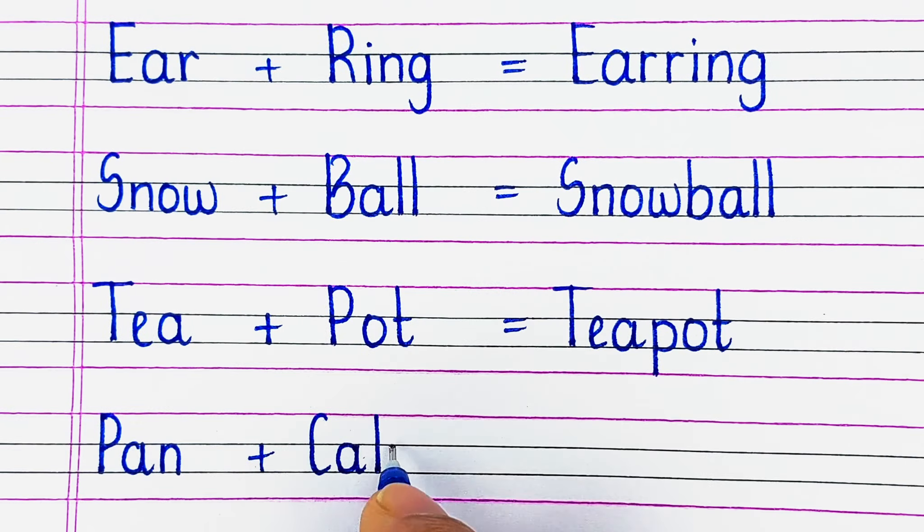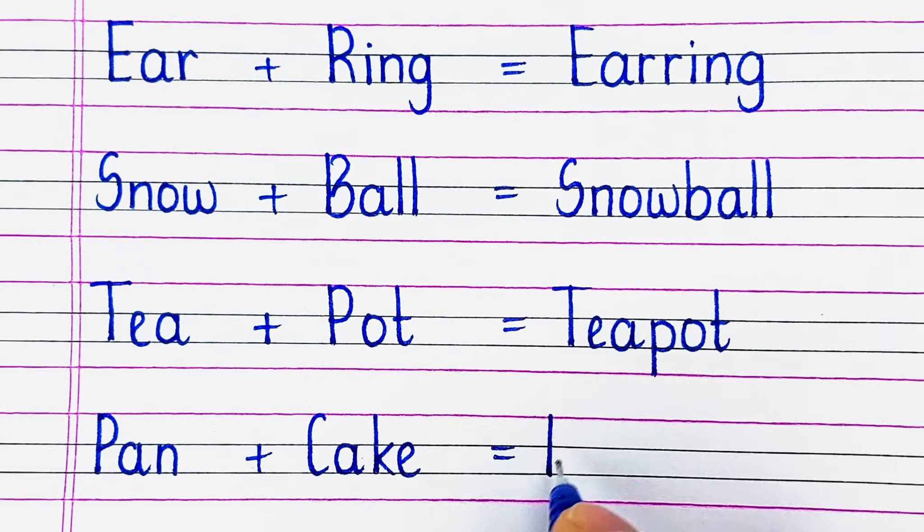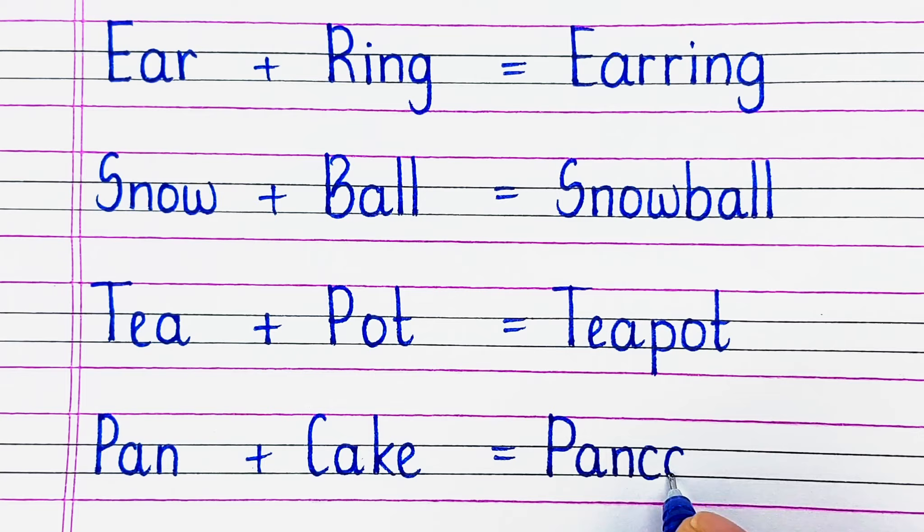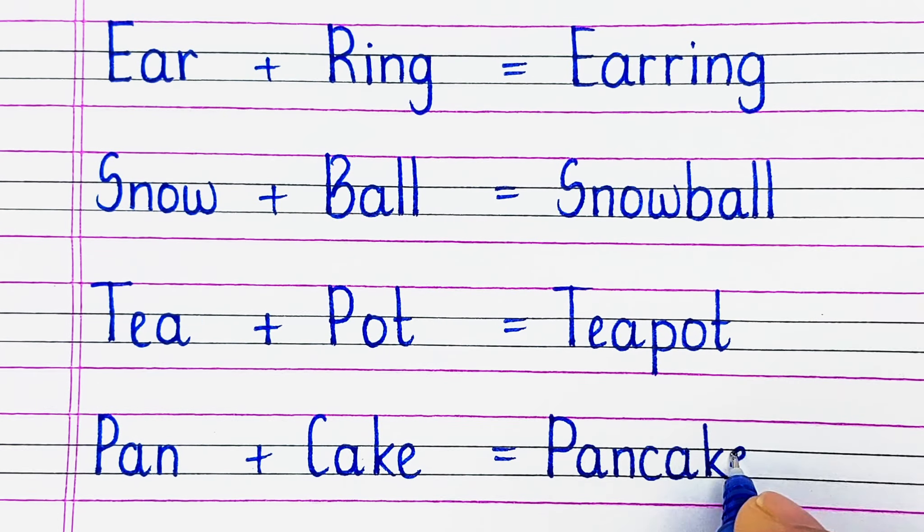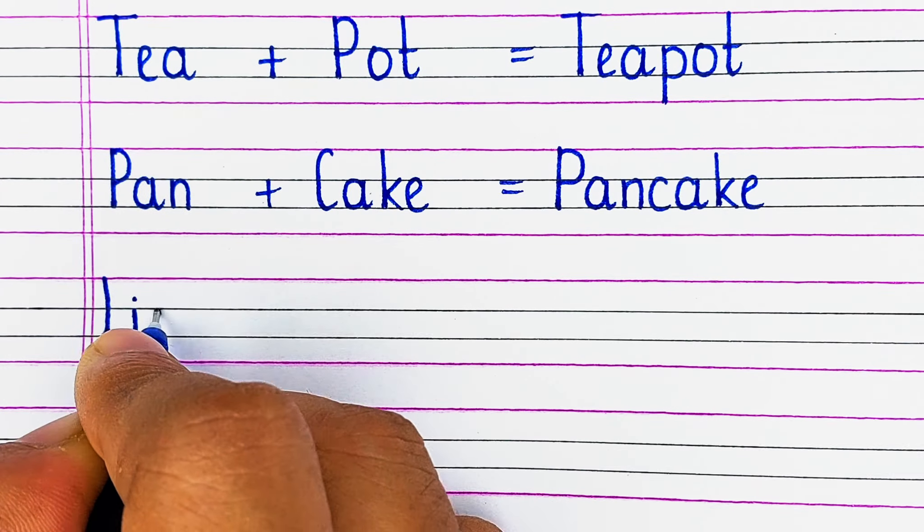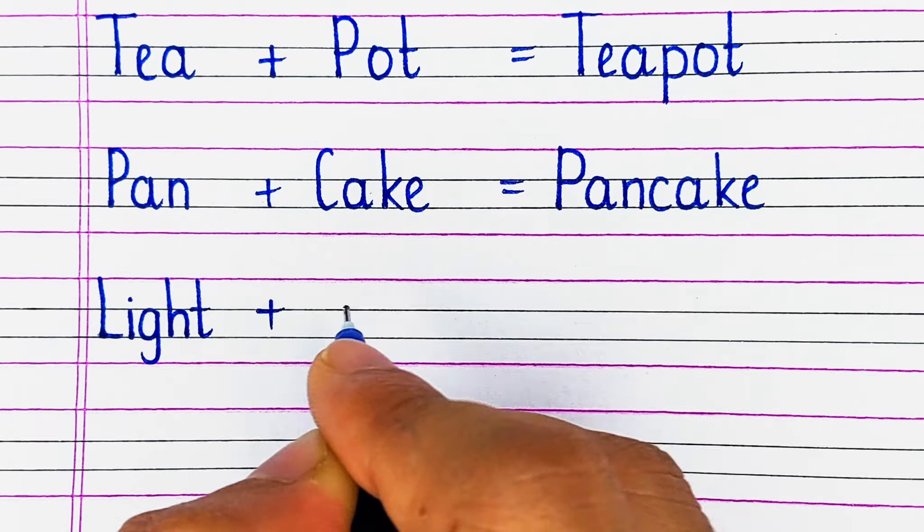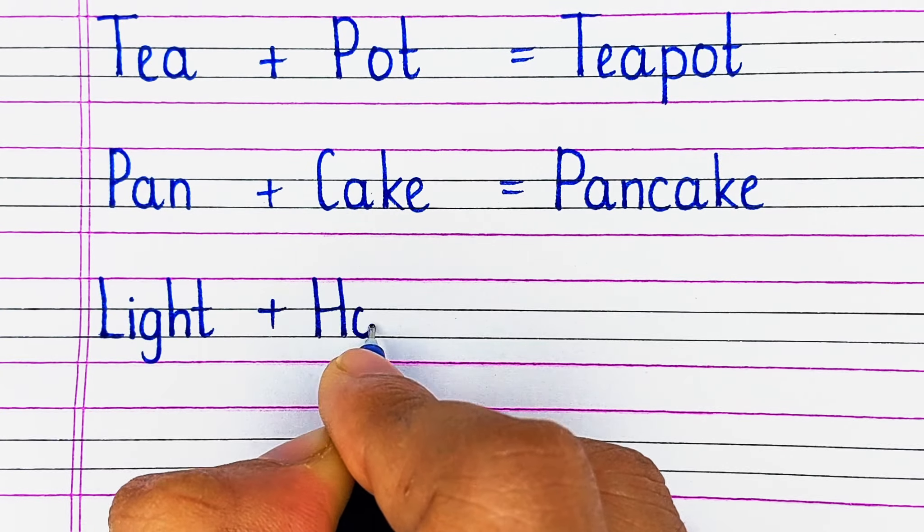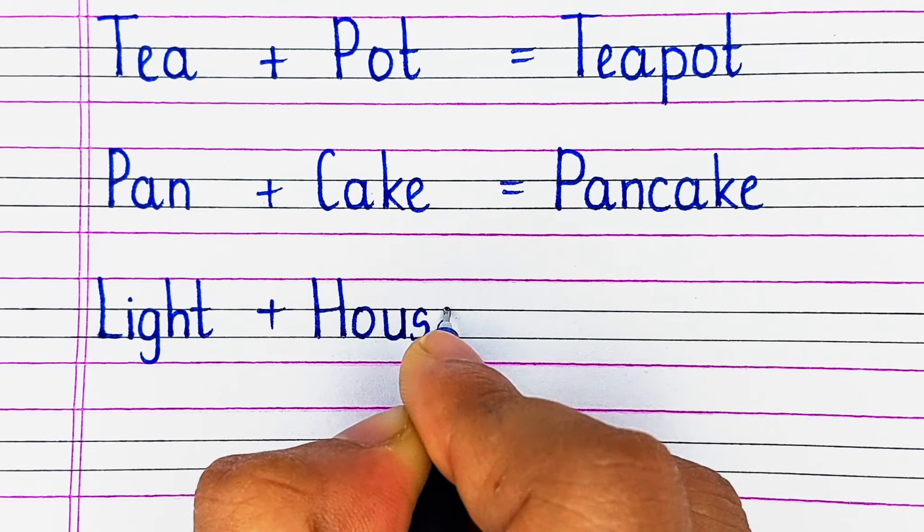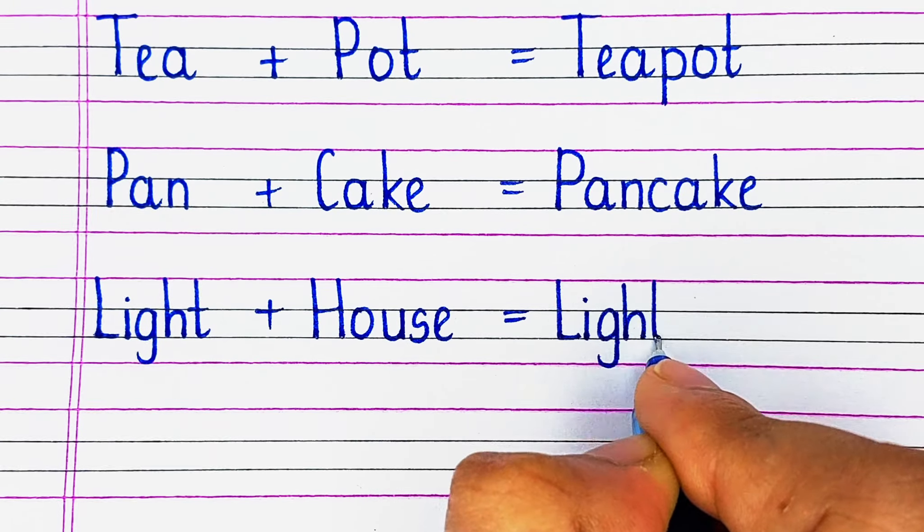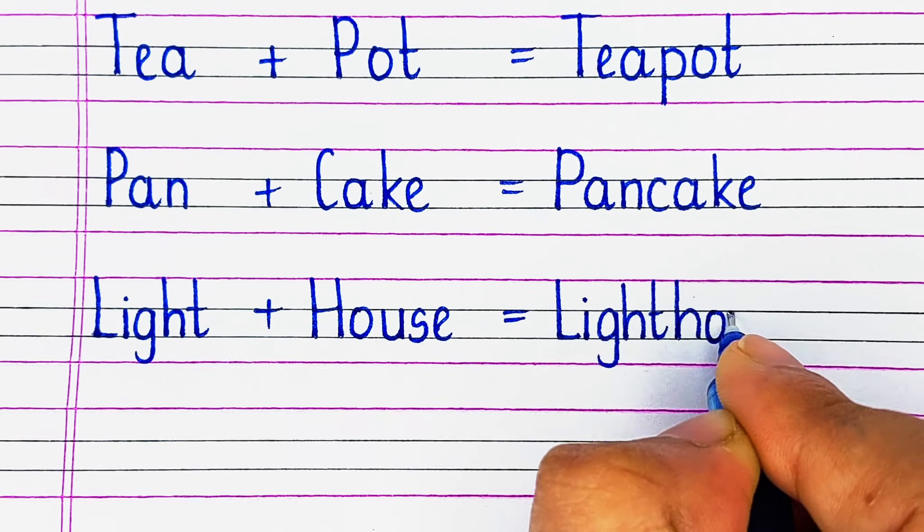Next up we have P-A-N pan plus C-A-K-E cake, pancake. Next is L-I-G-H-T light plus H-O-U-S-E house, lighthouse.